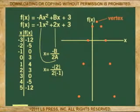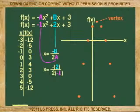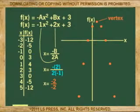In this case, b equals 2 and a equals negative 1. The x value for the vertex is negative 2 over negative 2, or positive 1.